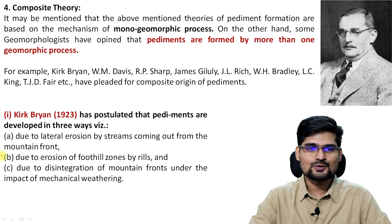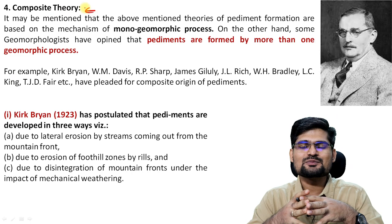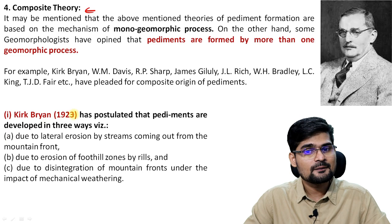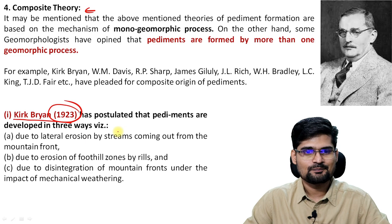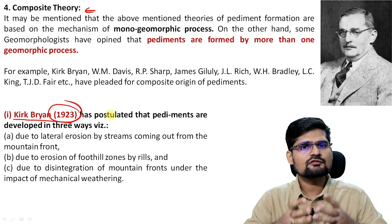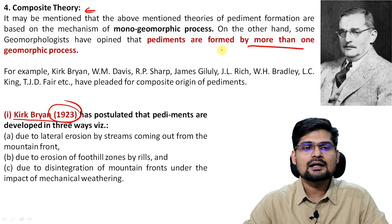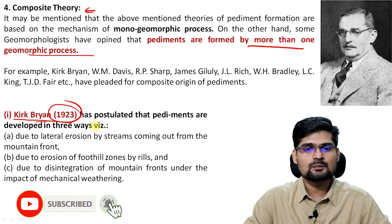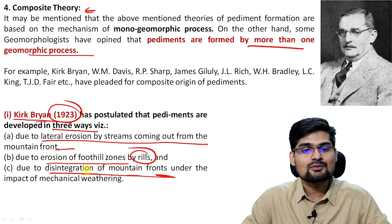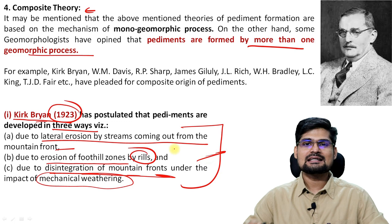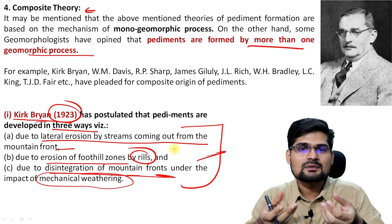The last theory is the composite theory. Composite means more than one process — like a composite volcano. The composite theory is attributed to Kirk Bryan in 1923. He said that not a single process can make this pediment — neither only lateral erosion, sheet flood, nor only aeolian and fluvial back-wasting. Pediments are formed by more than one geomorphic process. Kirk Bryan said pediments develop in three ways: due to lateral erosion by streams coming out from the mountain, due to erosion of foothill zones by rills and gullies, and due to disintegration of mountain fronts gradually due to mechanical weathering. He combined all three processes to make a clear understanding of pedimentation.